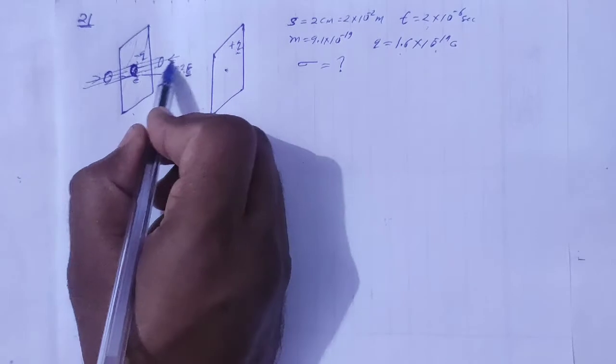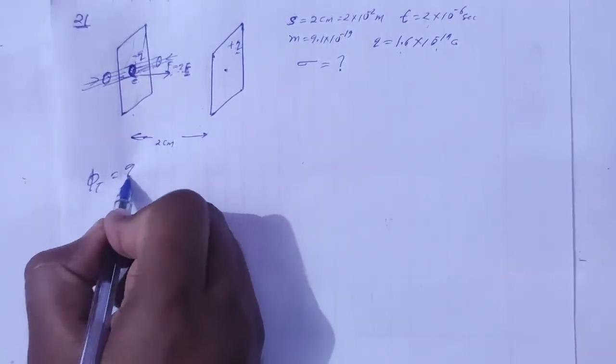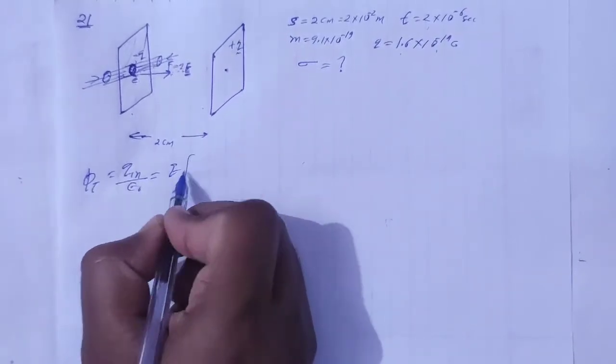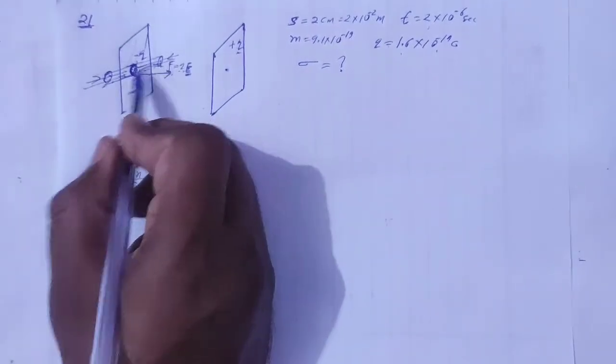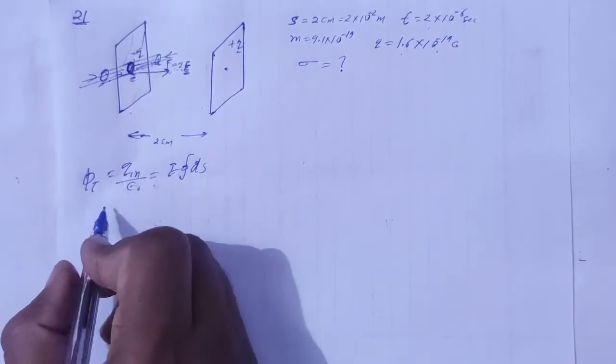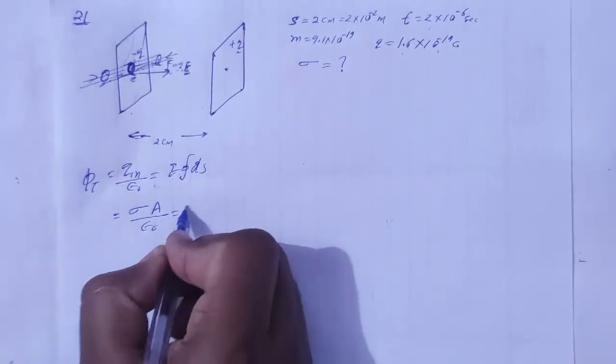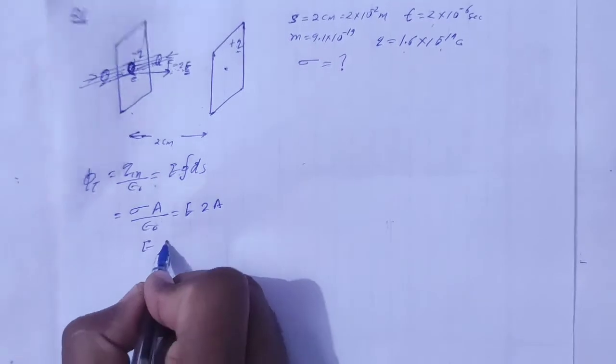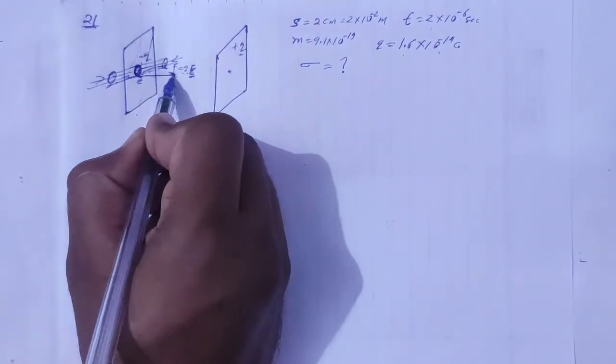Toh yahan pe, hapna baus akta hai, total flux is equal to charge enclosed upon epsilon naught is equal to e into ds. Area hapna yeh wala lehenge, charge enclosed sigma into a, epsilon naught is equal to e into 2a. A a cancel out, toh e is equal to sigma by 2 epsilon naught. Yeh hapka electric field hooga.